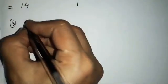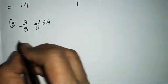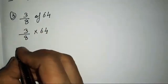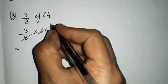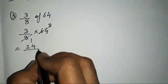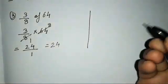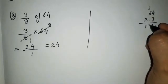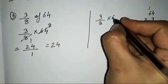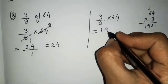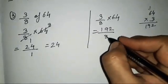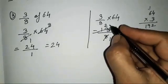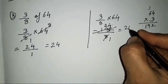The third sum is 3/8 of 64, meaning 3/8 × 64. Directly: 8 and 64 cancel to give 8, then 3×8 = 24. Alternatively, 3×64 = 192/8, and dividing 192 by 8 also gives 24. The answer is 24.